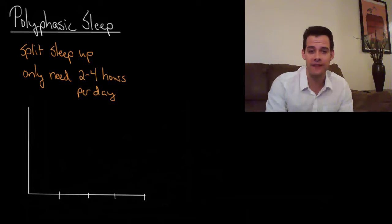So a polyphasic sleep schedule refers to splitting sleep up into smaller chunks or phases and then distributing these throughout the day. The idea is that this somehow makes your sleep more efficient and therefore you can get away with sleeping only 2 to 4 hours per day.